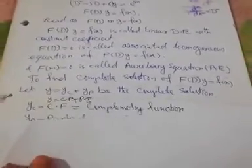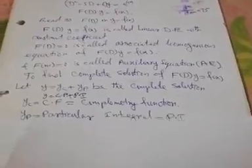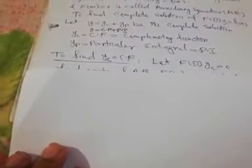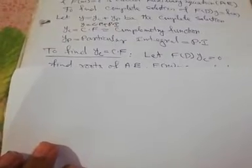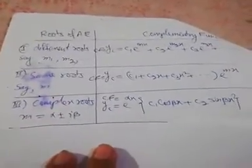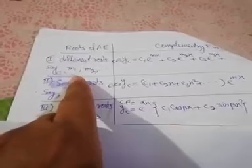We write the solution in terms of y_c, which is the complementary function, and y_p, which is the particular integral. The complementary function solution is obtained by setting f(D) on y_c equal to zero. We need to find the roots of the auxiliary equation f(m) equals 0, depending on the roots of that auxiliary equation.